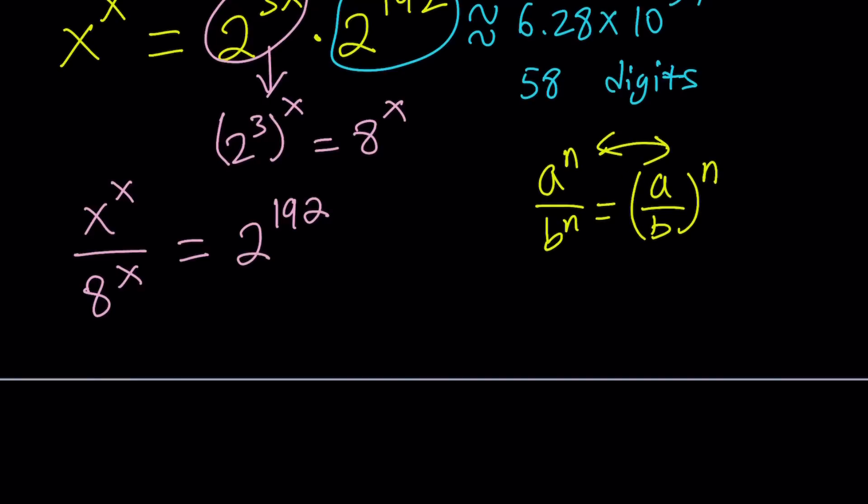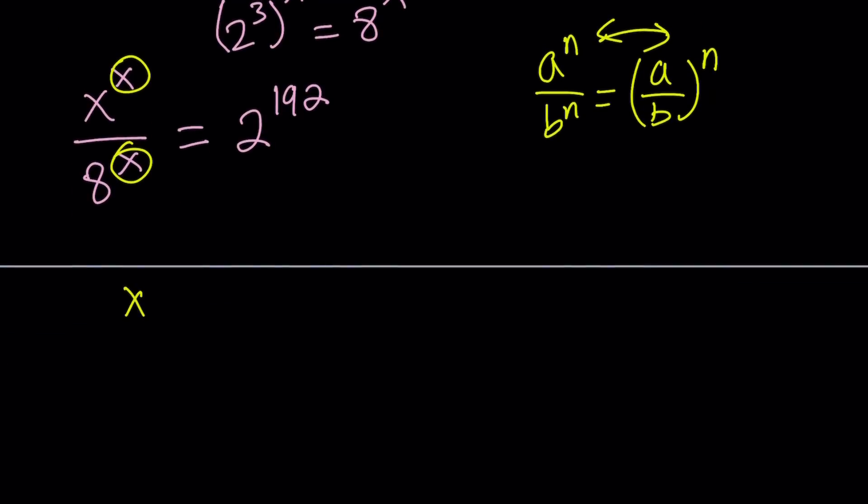So now we have a common exponent. We can write this as x over 8 to the power x, and that equals 2 to the power 192.